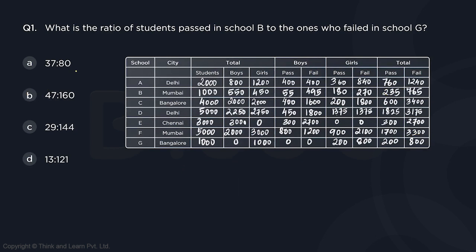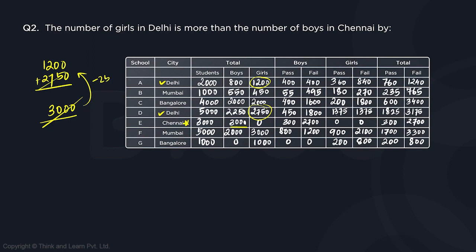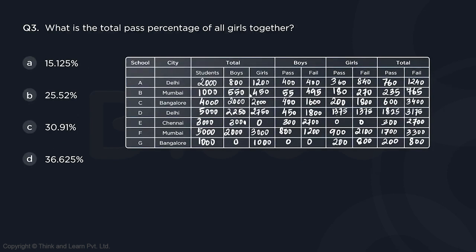Question 2: The number of girls in Delhi is more than the number of boys in Chennai by how much? Delhi has two schools — girls are 1200 (school A) and 2750 (school D), totaling 3950. Chennai has one all-boys school E with 3000 boys. The difference: 2750 and 3000 cancel out leaving 250 less, subtracted from 1200 gives 950. So Delhi has 950 more girls than Chennai has boys.